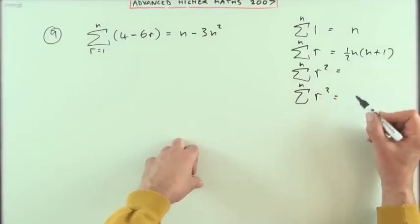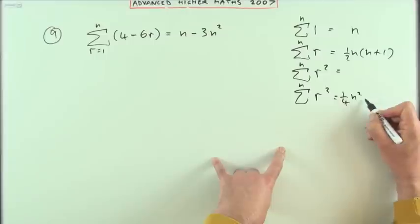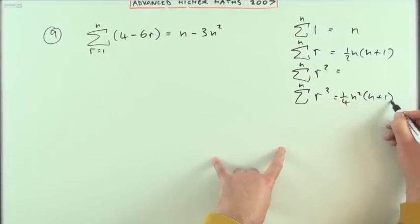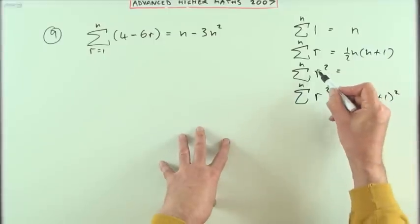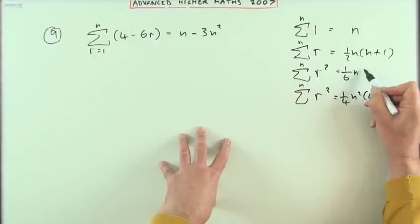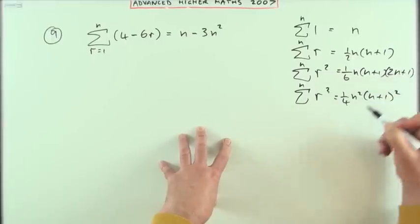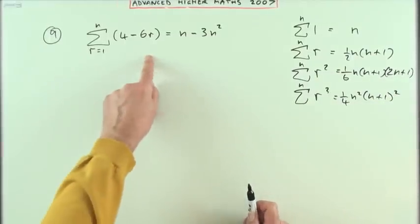And then the bracket squared. The sum of the squares, the formula for that is a sixth of n times n plus one times two n plus one. And when you get a question like this, it's just a case of splitting that up into these different formulas, whichever ones apply.